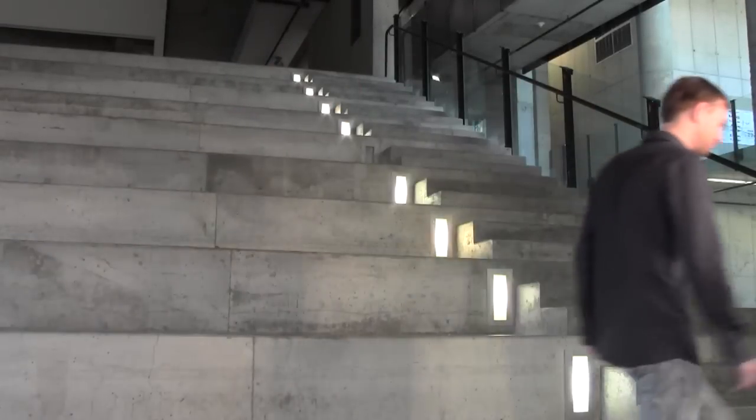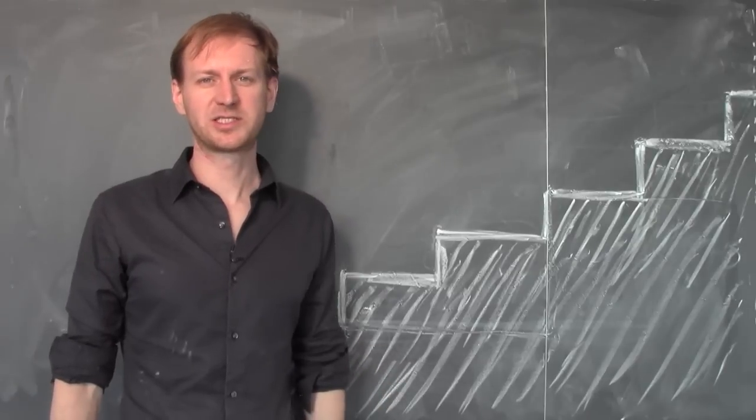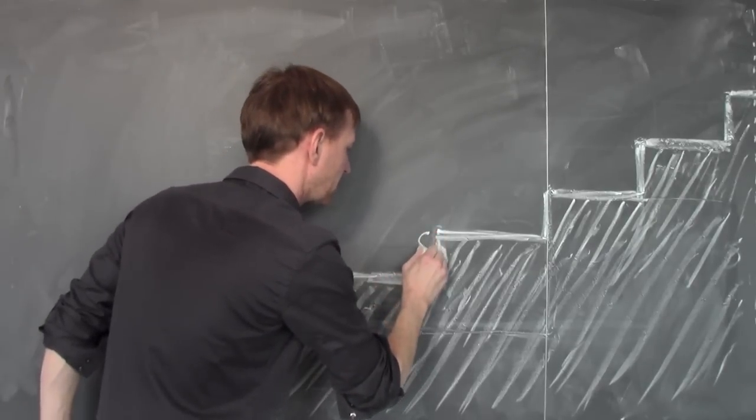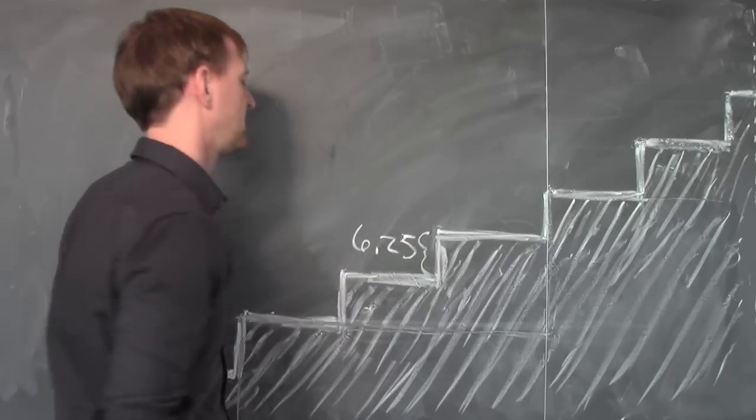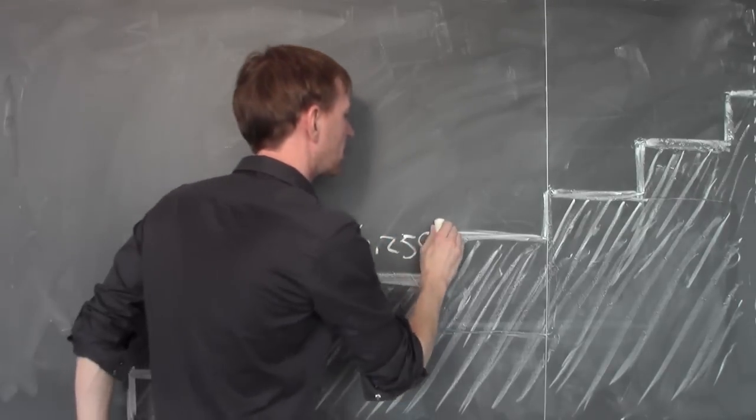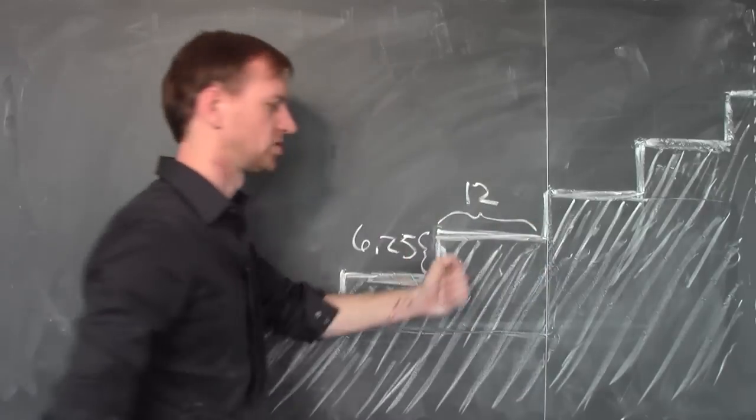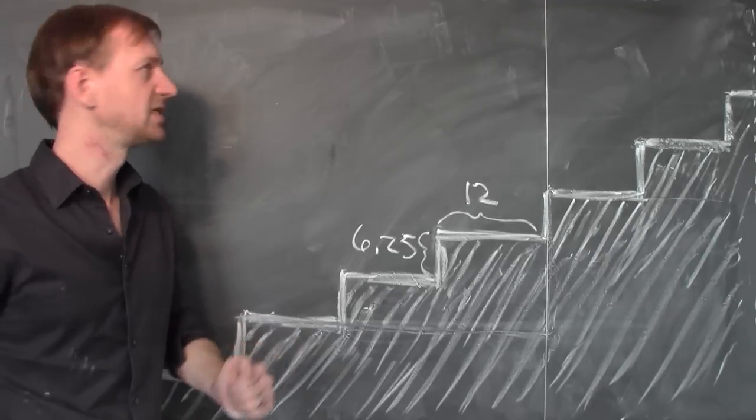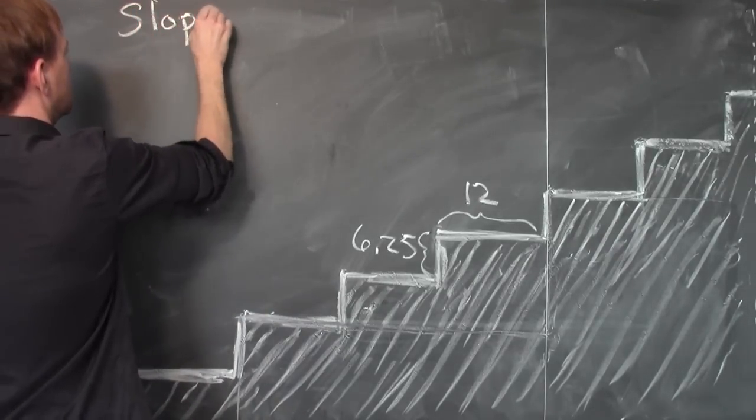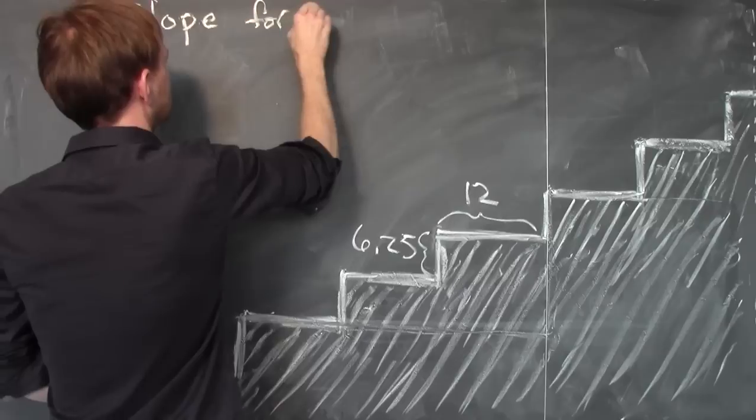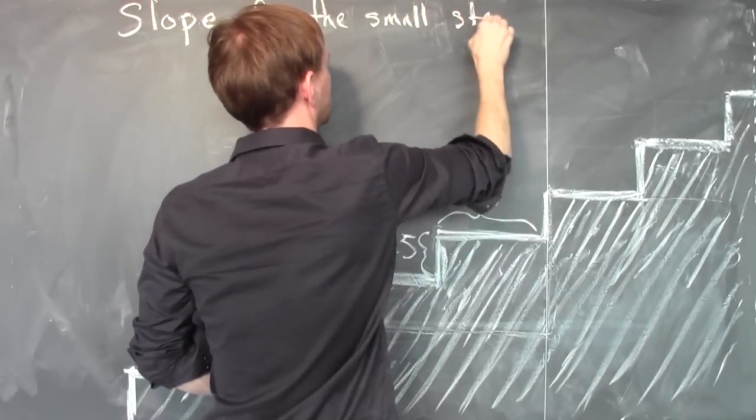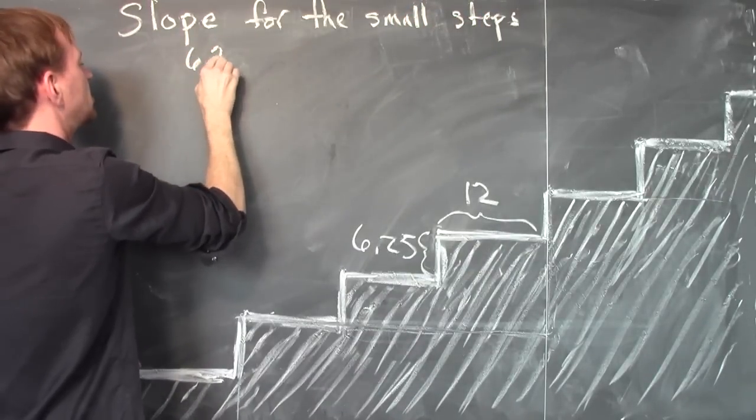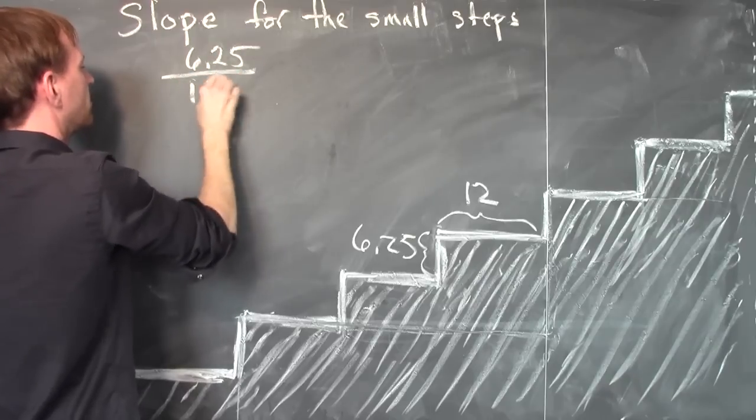Now that we've made the measurements, let's go compute the slope. So we've measured our stairs and we found out that the small steps went up by 6 1⁄4 inches and they were 12 inches wide. This gives us a slope for the small steps of 6.25 over 12.